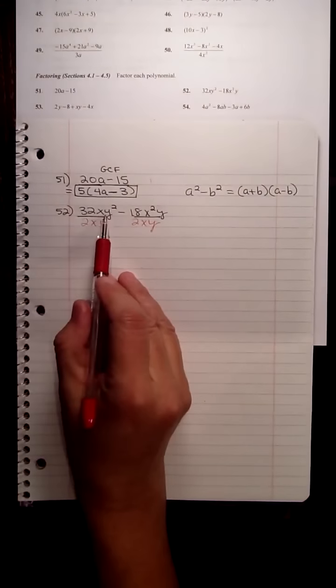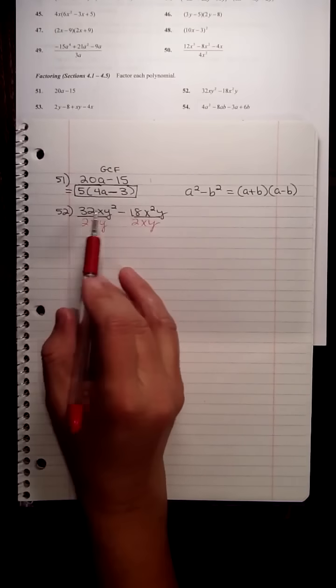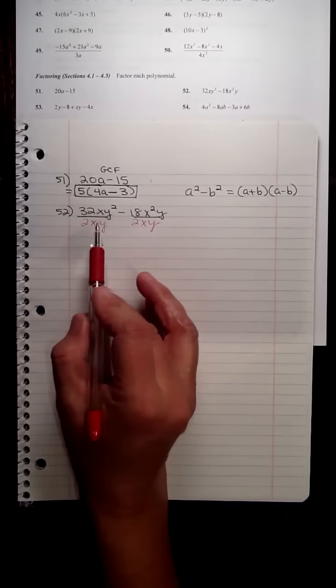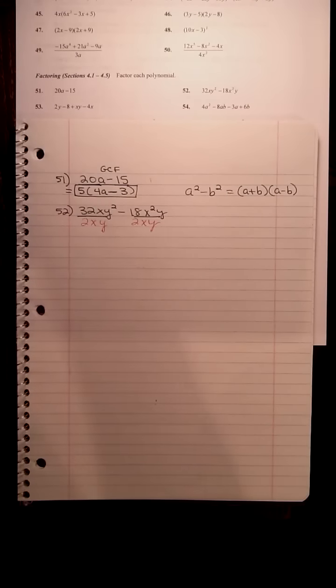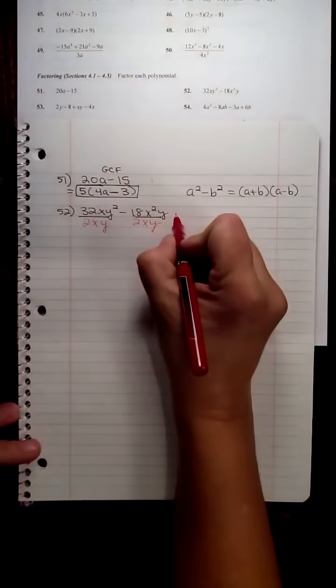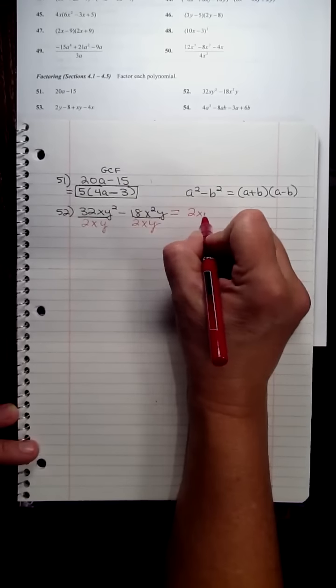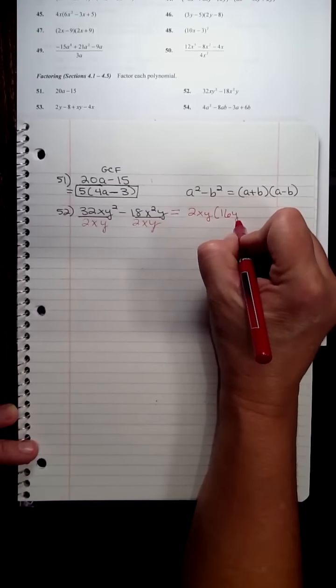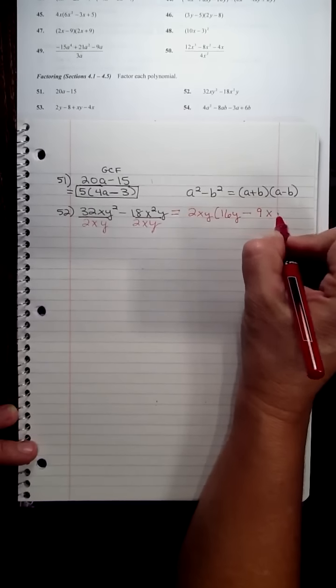To factor 32xy squared minus 18x squared y, that's number 52, we can divide both of these terms by 2xy. So that means we can write this expression as 2xy times 16y minus 9x.